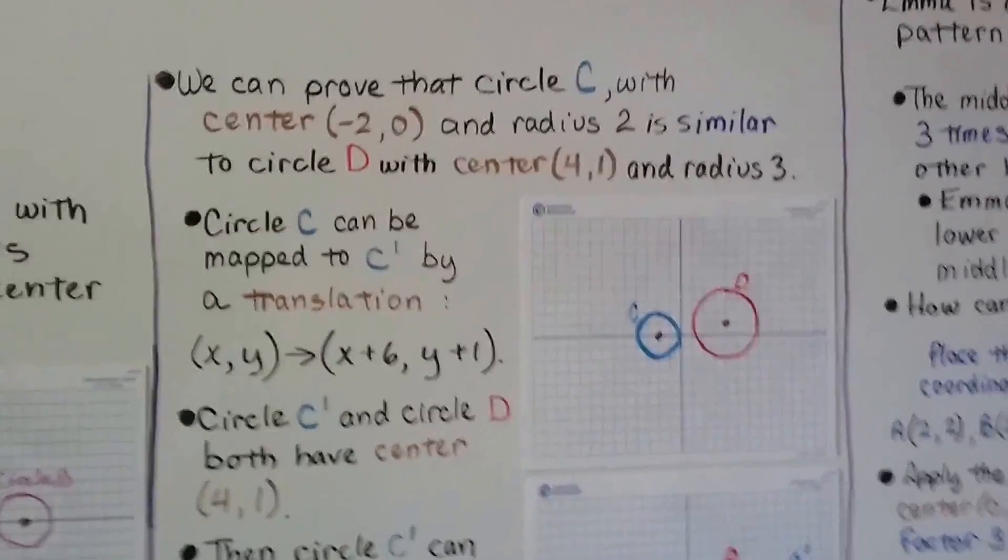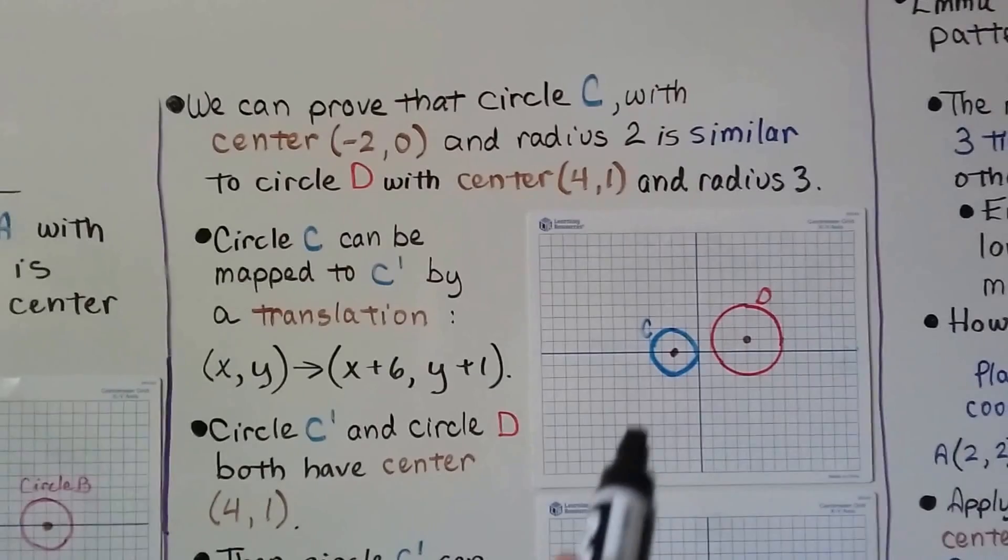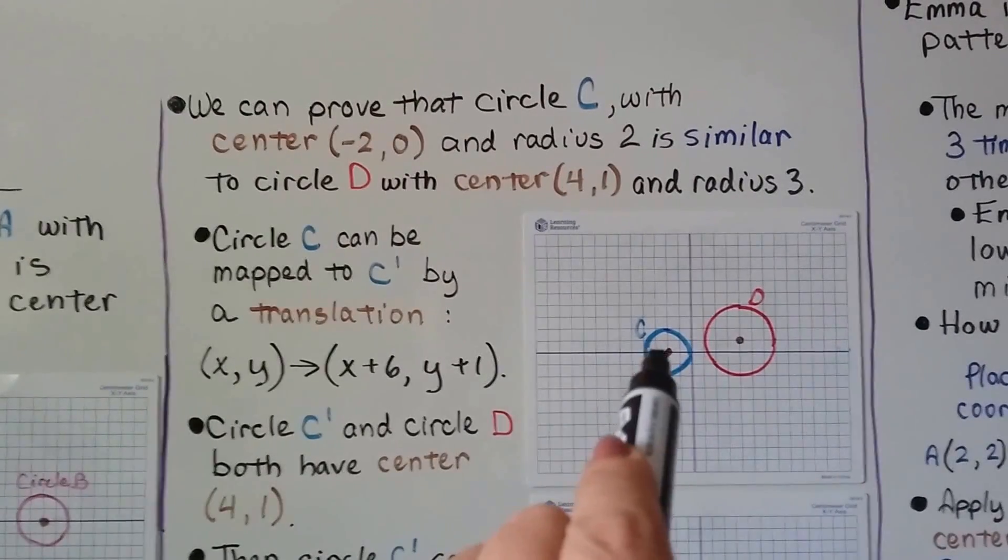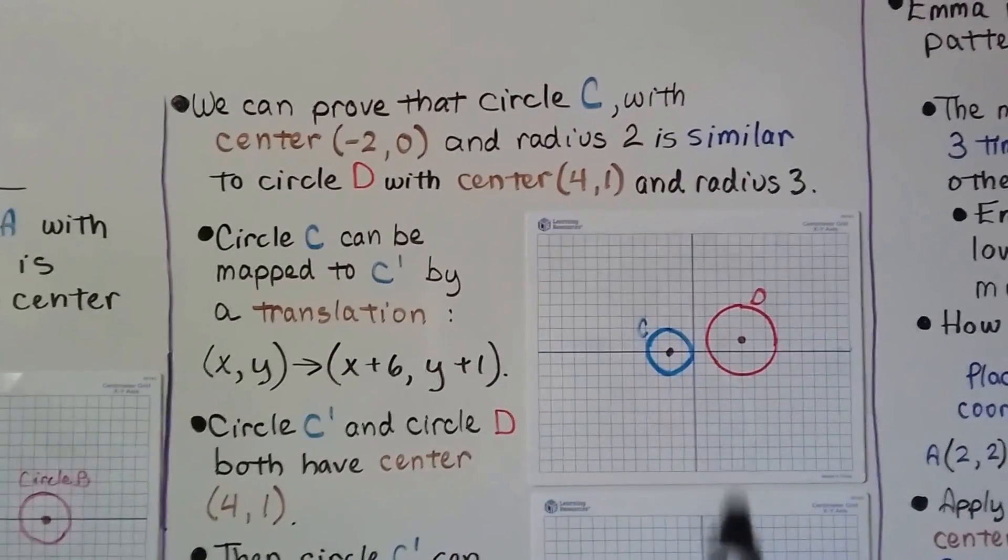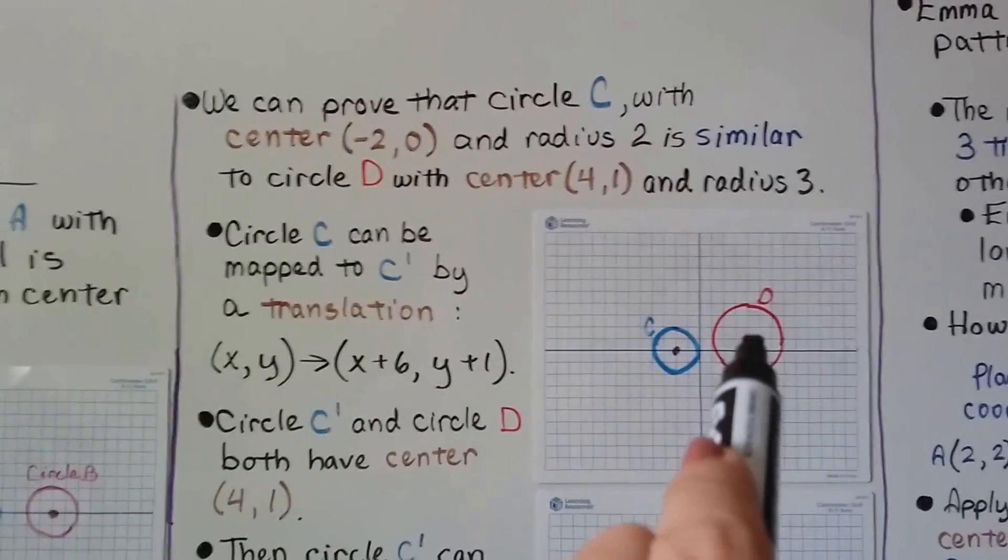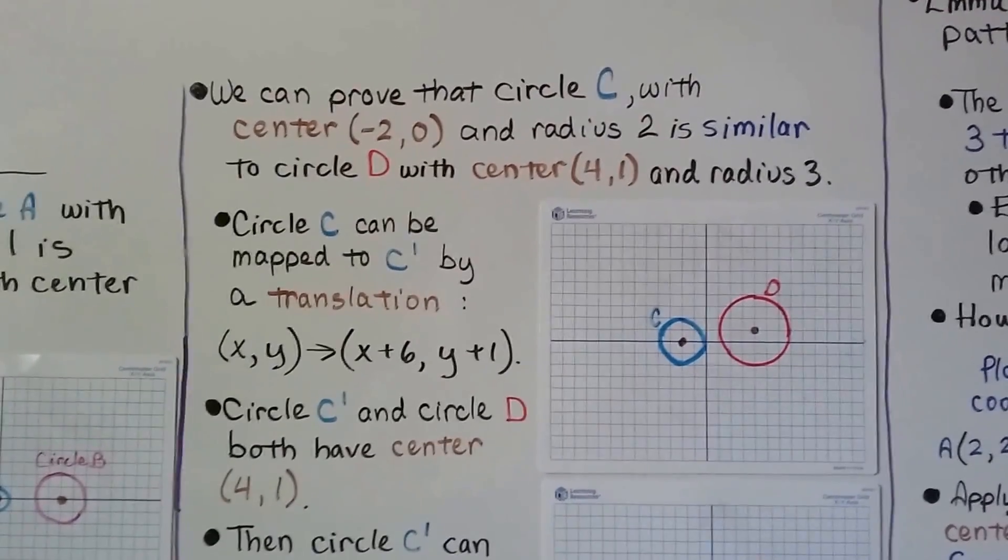We can prove that circle c with center negative two zero and radius two is similar to circle d with center four one and radius three.